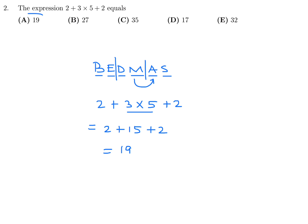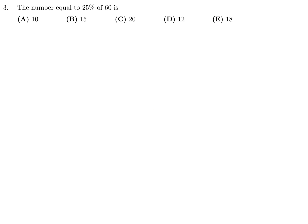The number equal to 25% of 60. 25% can be written as 0.25, multiply that by 60 and you've got your answer. In this case the answer is 15, so number 3, that would be B.